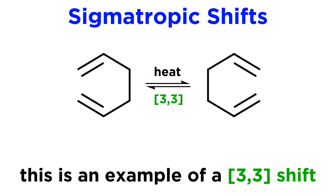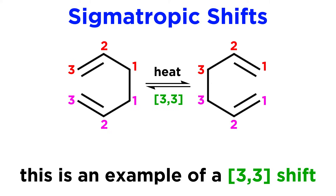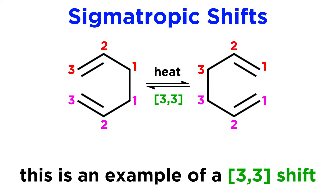This reaction is an example of a 3-3 shift. This numbering can be understood if we treat the molecule as two fragments, and number the two carbons participating in the sigma bond as carbon 1 of each of the two fragments, continuing to number across to get carbons 2 and 3. As we can see, the sigma bond between carbon 1 and carbon 1 is broken, and the new sigma bond is between carbon 3 and carbon 3.